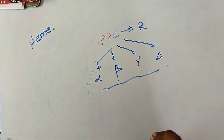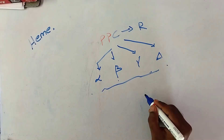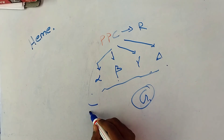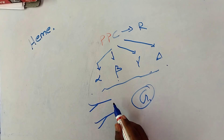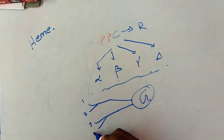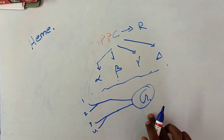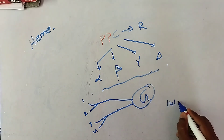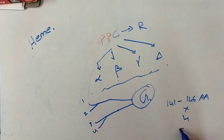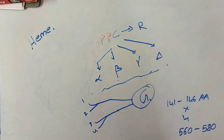Each globin molecule is formed by combination of two pairs of chains — that means four chains total combine to form globin. Each chain has 141 to 146 amino acids, so altogether approximately 560 to 580 amino acids are involved in forming each globin molecule.